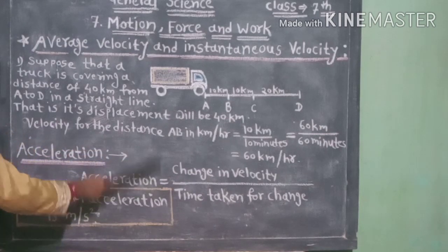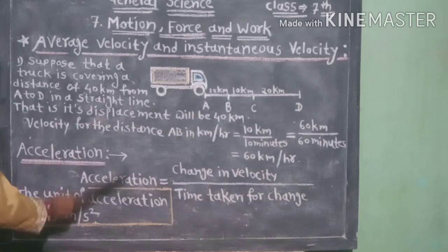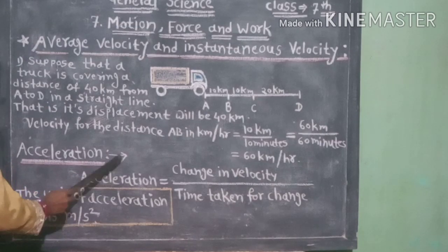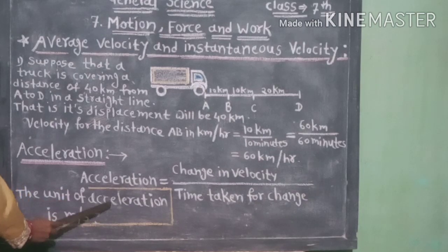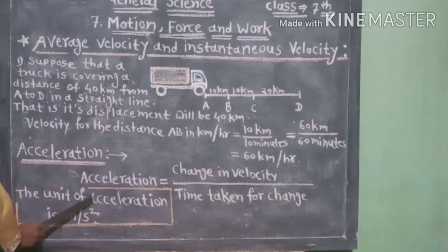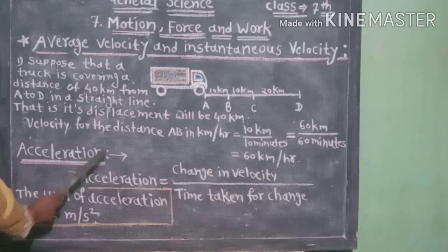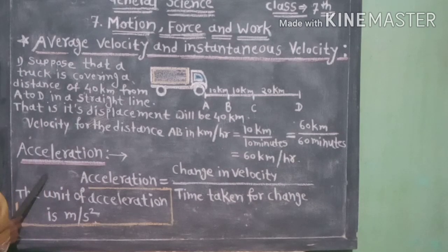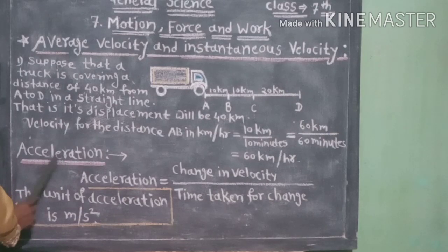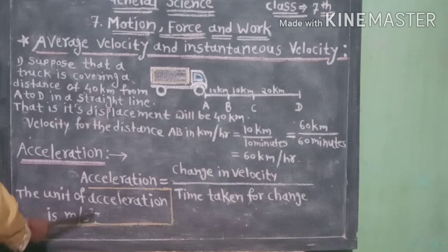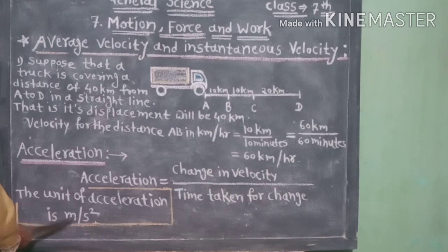The truck driver increases or decreases the velocity of the truck by means of the accelerator. ट्रकचा चालक accelerator चा वापर करून वेग जास्त वा कमी करत असतो. एखाद्या खेळाडूने चेंडू पायाने ढकलल्यावर त्याची दिशा बदलताना आपण पाहतो — दिशा बदलल्यामुळे चेंडूचा वेग बदलतो, म्हणजेच त्वरण घडते. The unit of acceleration is metre per second square.